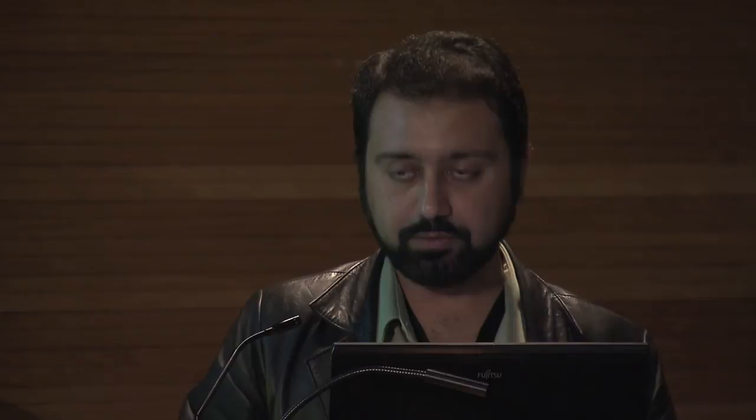We investigated that, and with some legwork eventually found out this was a discrepancy between male patients and female patients. Only kidney cancer so far has shown this huge dichotomy between male and female patients in the DNA methylation data. It's not terribly surprising — thinking about the X chromosome, in females one of the X chromosomes might be turned off. We removed sex chromosomes from this particular analysis, and when we did that, a new dichotomy appeared across batch boundaries — batches 65 and 32 on top, and 50, 64, and 69 at the bottom. This was done using the MBatch R package.